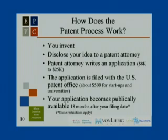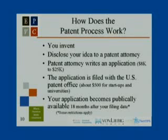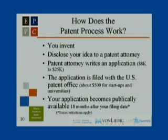How does the patent process work? First, you invent something and disclose it to a patent attorney. The patent attorney writes a patent application, which costs between $8,000 and $25,000 out of pocket, depending on how intricate your idea is. The application is then filed with the patent office—this is the filing date we're talking about today. The review process you do as an inventor takes place before that filing date, between the drafting and filing steps.